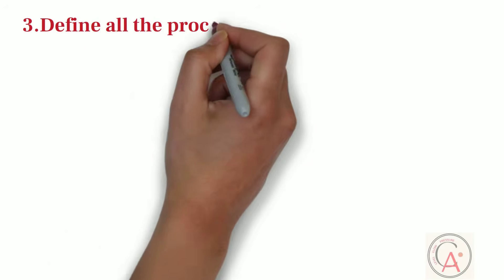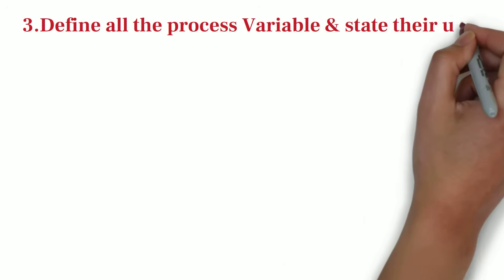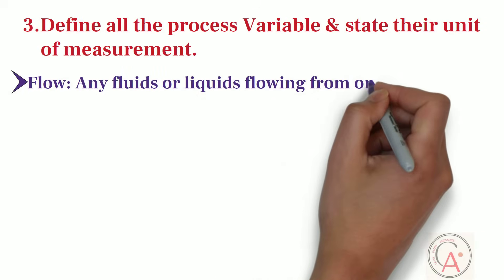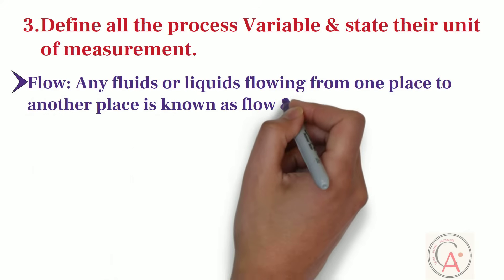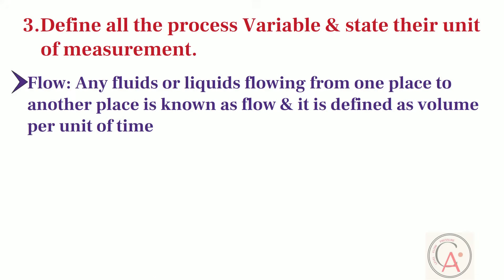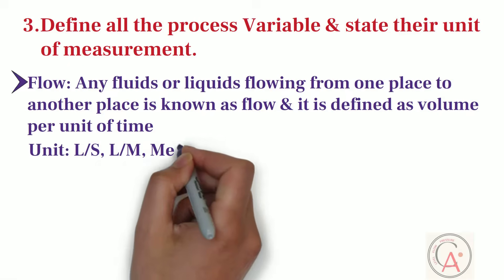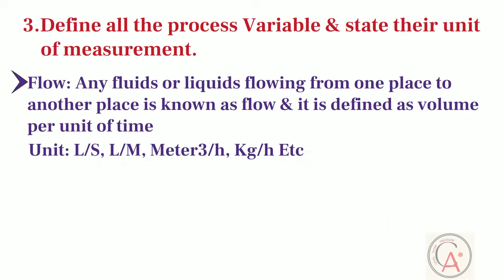Define all the process variables and state their unit of measurement. First type of process variable is the flow. Any fluids or liquids flowing from one place to another place is called flow, and it is defined as volume per unit of time. Flow is usually measured in liters per seconds, liters per minute, meter cube per hour, kilograms per hour, etc.